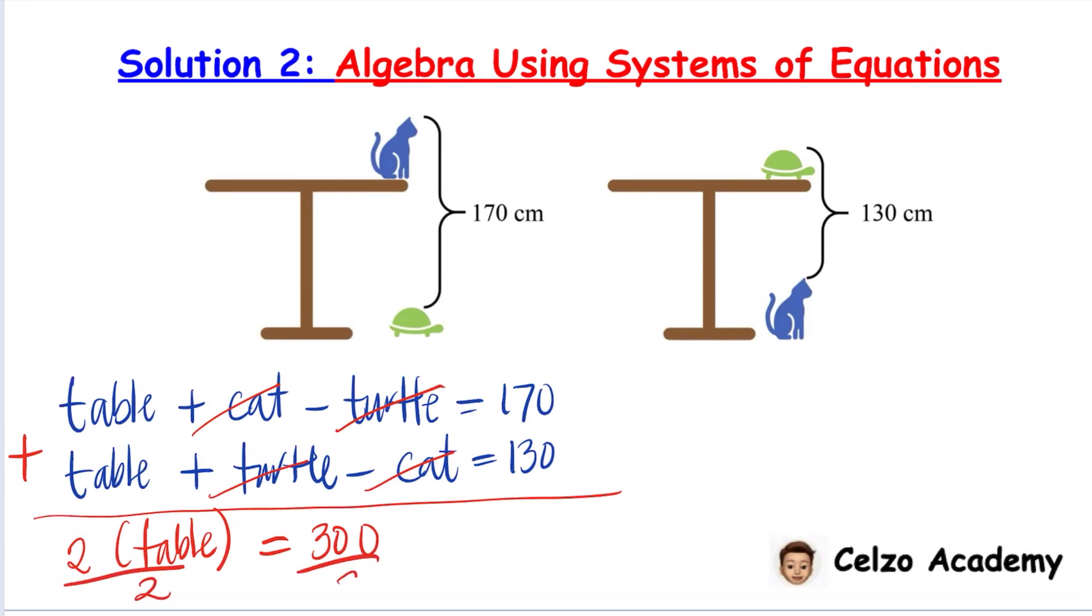Dividing both sides by 2, this means that the height of the table is equal to 150 centimeters.